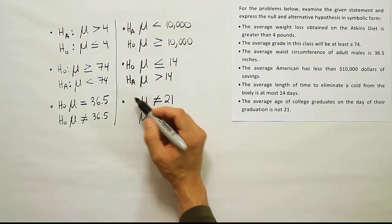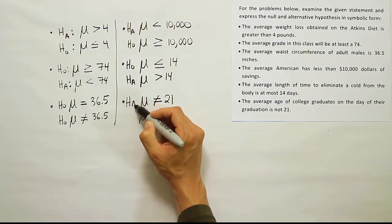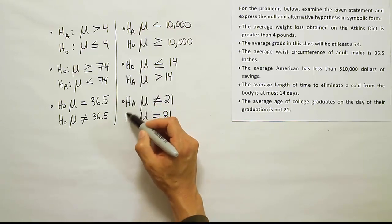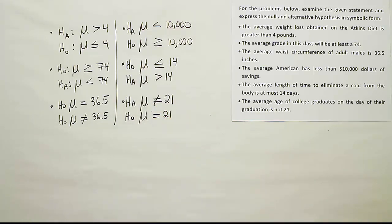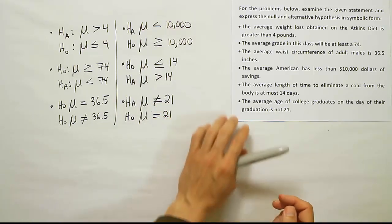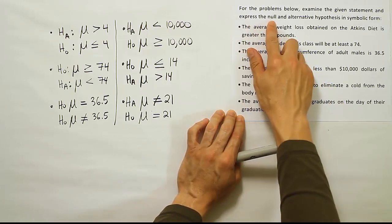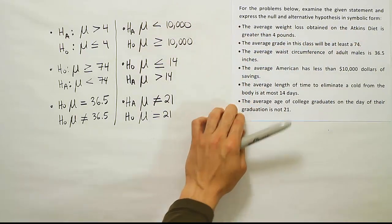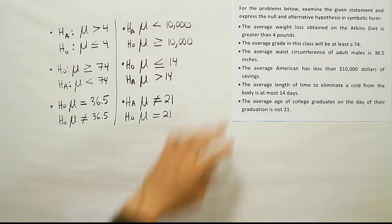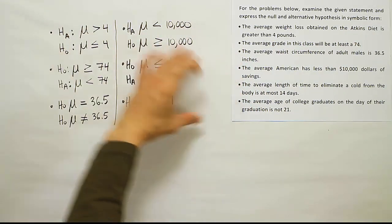Remember, if it has a not equal to symbol, it's Hₐ. If it has an equal to symbol, it's always H₀. So for each of those, we found the null and alternative hypothesis for every scenario - all six of those. The first three are here, the last three are here.